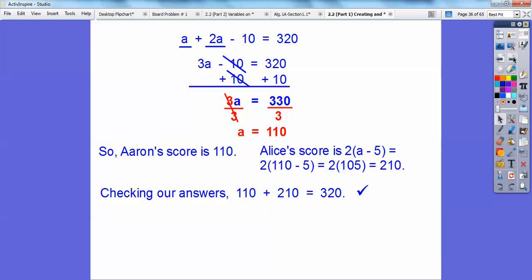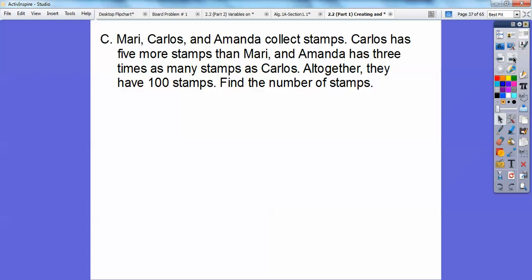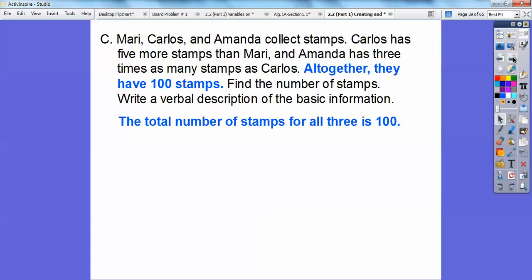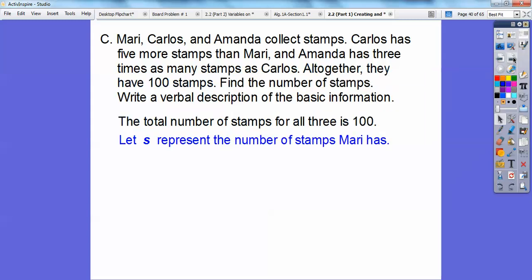Let's try another one you guys. Marie, Carlos, and Amanda collect stamps. Carlos has five more stamps than Marie. And Amanda has three times as many stamps as Carlos. Altogether they have 100 stamps. So find the number of stamps. Let's write a verbal description of this basic information. The total number of stamps for all three is 100. So that just means each score is going to add up to 100.